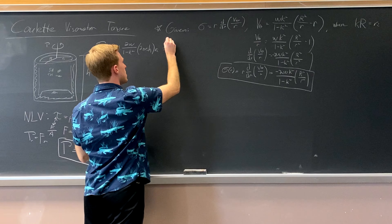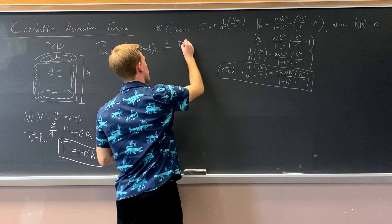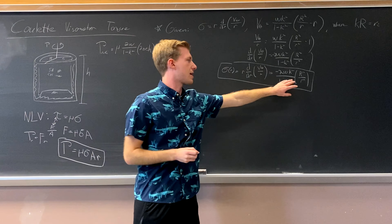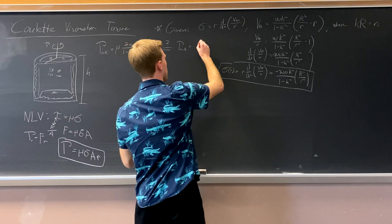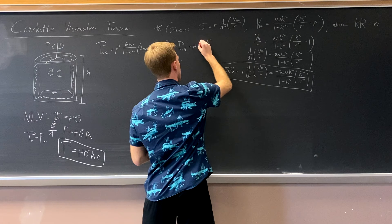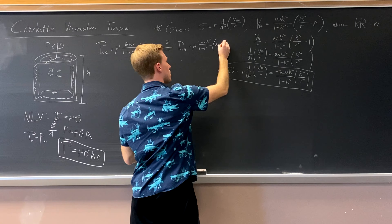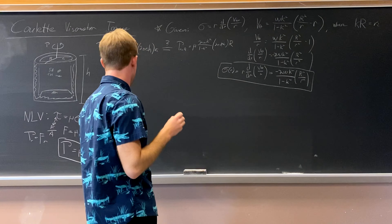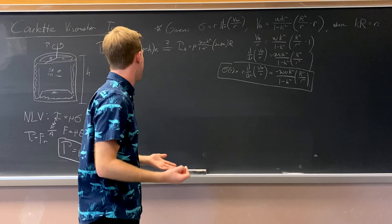Now we want to see if this equals the torque at r equals capital R. Plugging capital R into the shear rate, capital R squared over capital R squared equals 1, so what we get is: viscosity times 2 omega k squared over (1 minus k squared), times 2 pi capital R times H, times capital R. So now we set these two expressions directly equal to each other and see if they cancel.